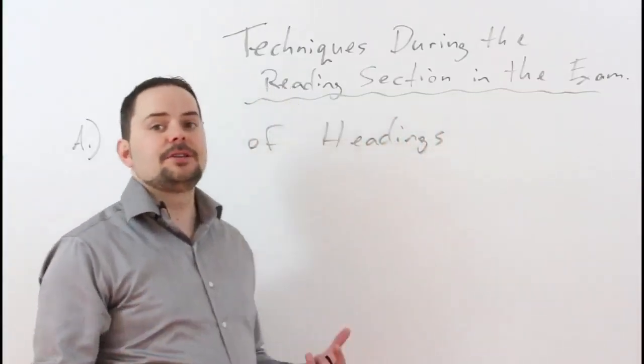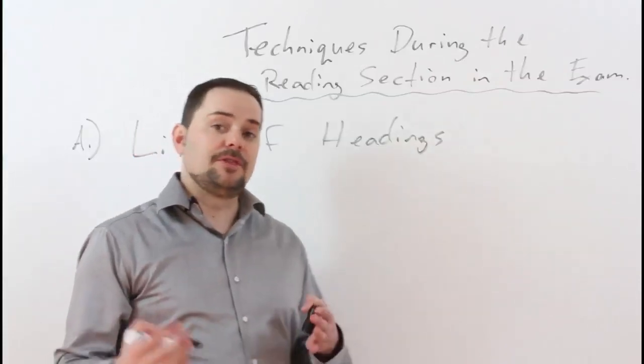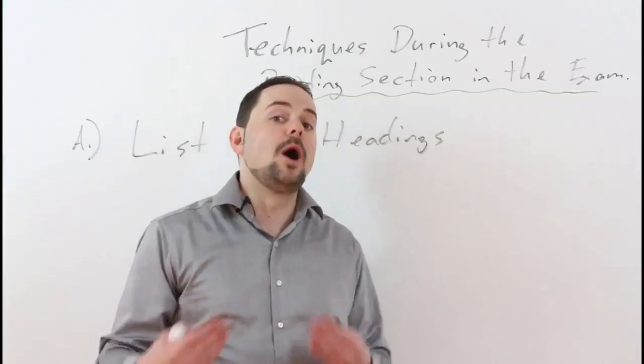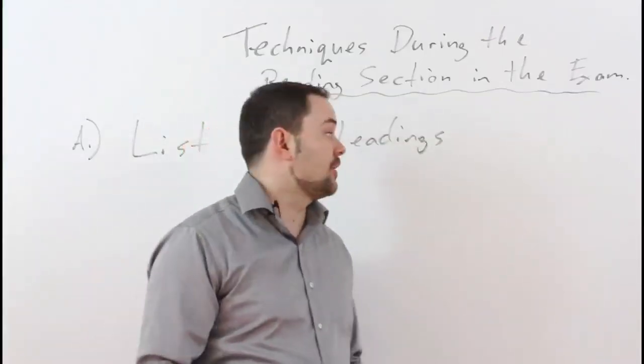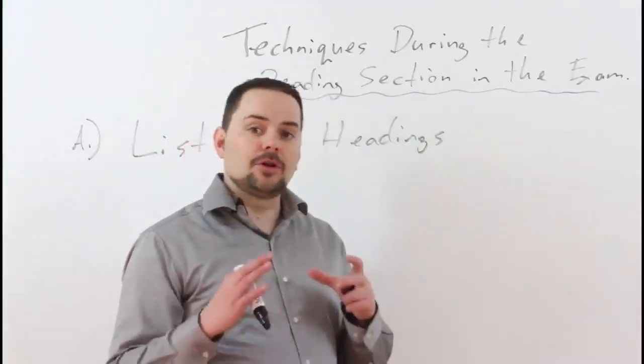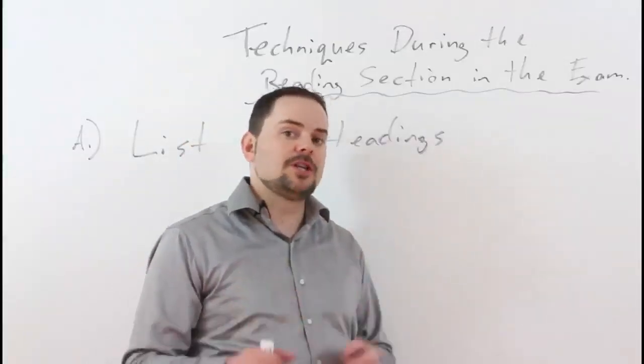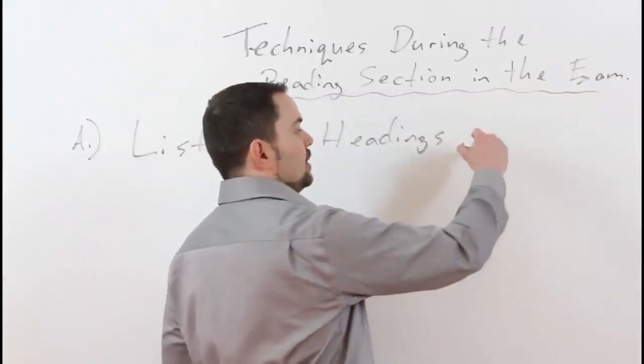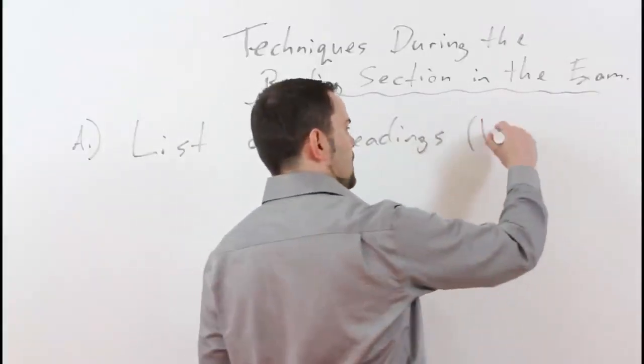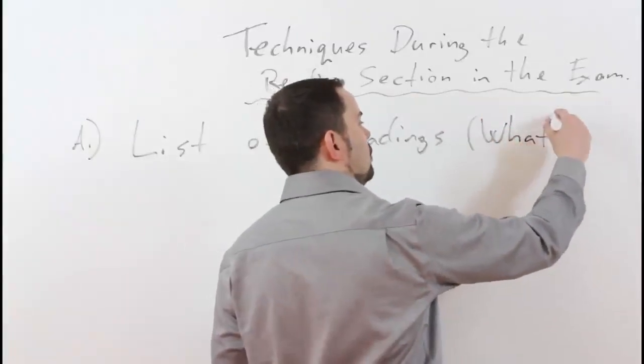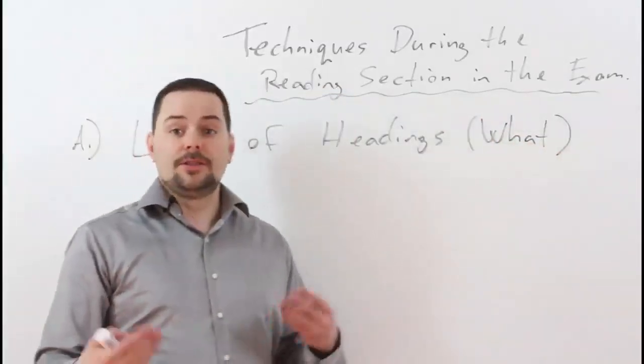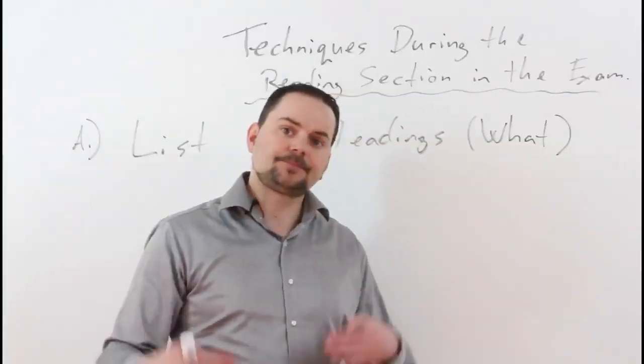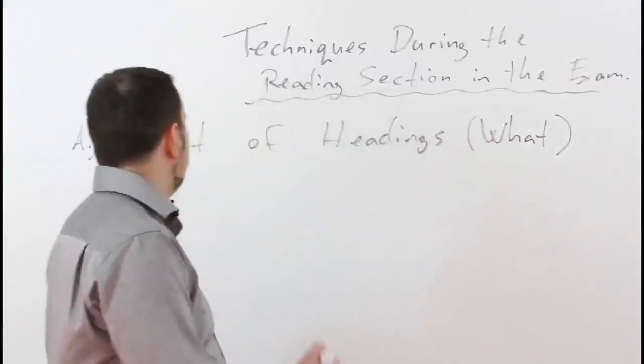Now, the list of headings, if we think about this question, we realize that it's trying to find the what answer. So, what is each paragraph about? Again, if you look at questions, simplify them. Is it a what question? Is it a why question? Is it a how question? This makes it more easy to figure out the correct answer. So, these are what questions, simply asking, what is the paragraph about? Or, what is the best title for the paragraph? Okay? So, the first point here is it's the only question that you should answer as you read.